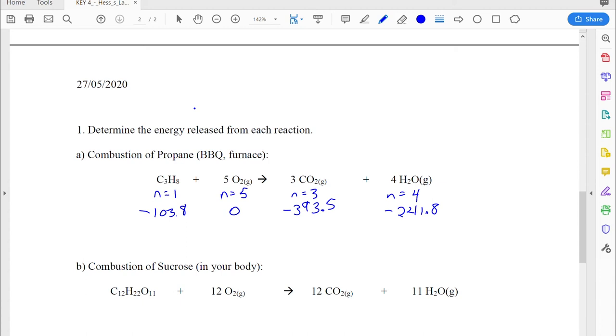There we go. So I've got all that worked out. Now I'll do my multiplications. So if I need to multiply 1 times negative 103.8, that's easy enough. It doesn't change at all. 5 times 0 is just 0. So nothing more to do there. And now on the other side here, I'm going to grab my calculator and I'm going to multiply together 3 and negative 393.5. So that's going to give me negative 1180.5. And I'm going to do 4 multiplied by negative 241.8. So that's negative 967.2.